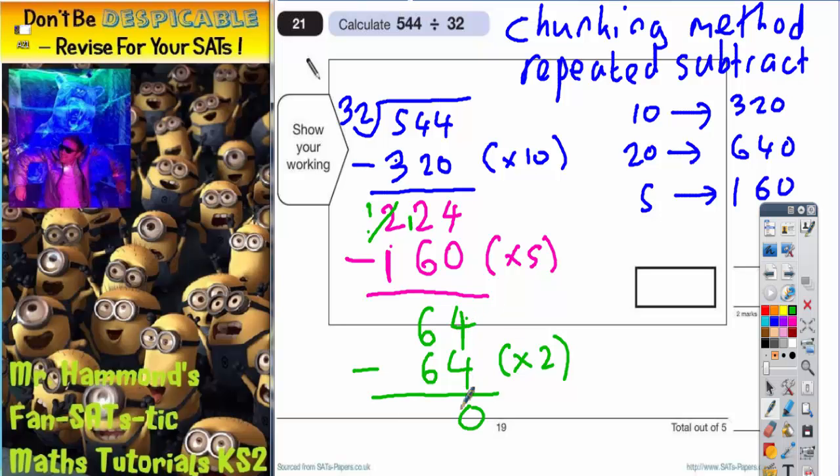4 take 4 is 0, 6 take 6 is 0. So we've got nothing left, and this is the whole idea of chunking - keep subtracting until you've got nothing left. Once you've got nothing left, you're nearly finished. You've got to count up how many chunks of 32 that you've subtracted all together. So we've done 10 chunks, 5 chunks, and 2 chunks.